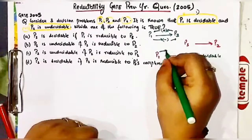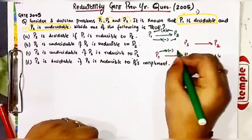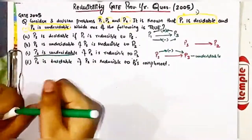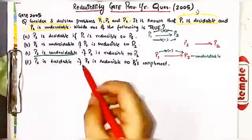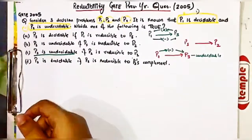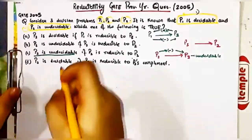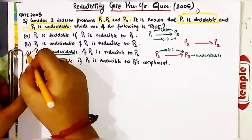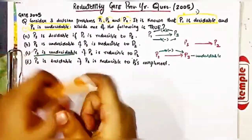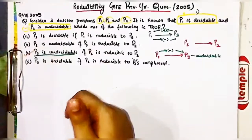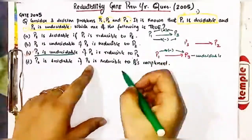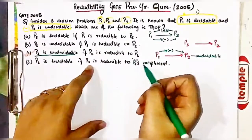Since P2 passes negativity to P3, option C — which states that P3 is undecidable if P2 is reducible to P3 — is absolutely the correct option.